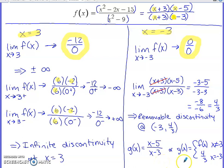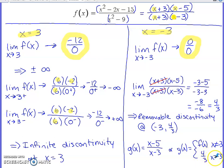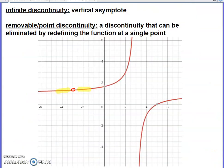Another way to think about it: redefine the function as g of x, where g of x equals f of x for all x not equal to negative 3, and at x equals negative 3, g of x equals 4 thirds. This fills the open circle in the graph with a closed circle at the point (negative 3, 4 thirds), removing the discontinuity entirely.